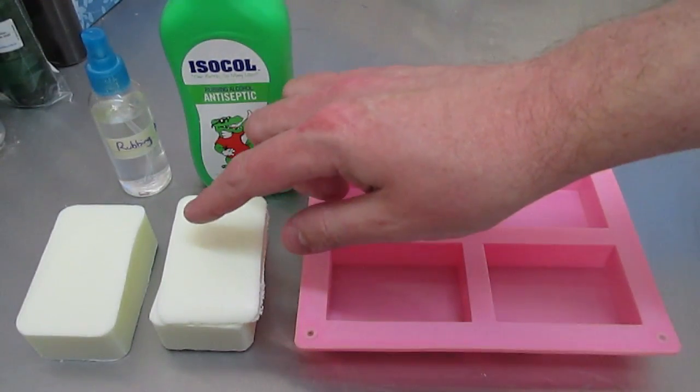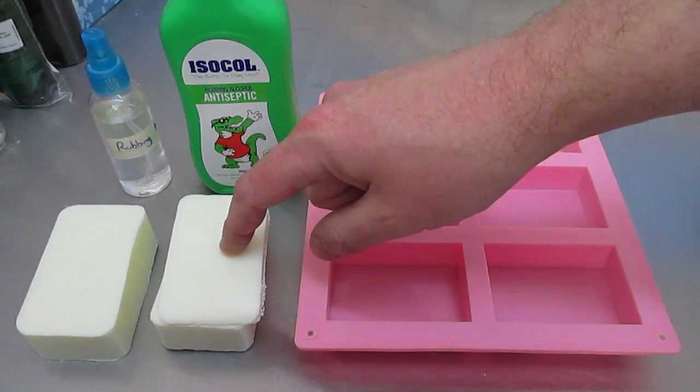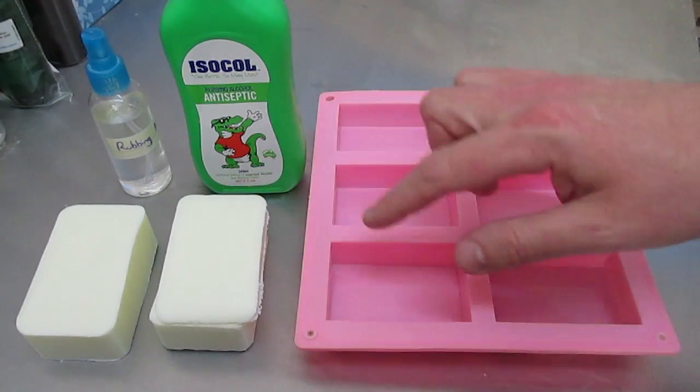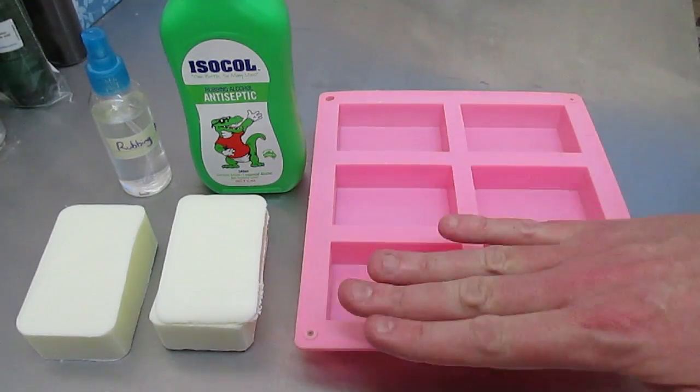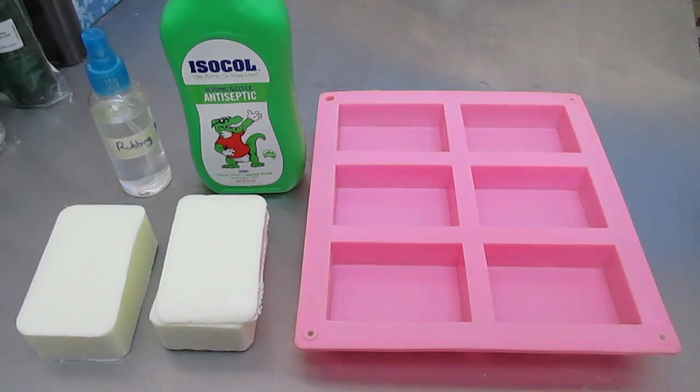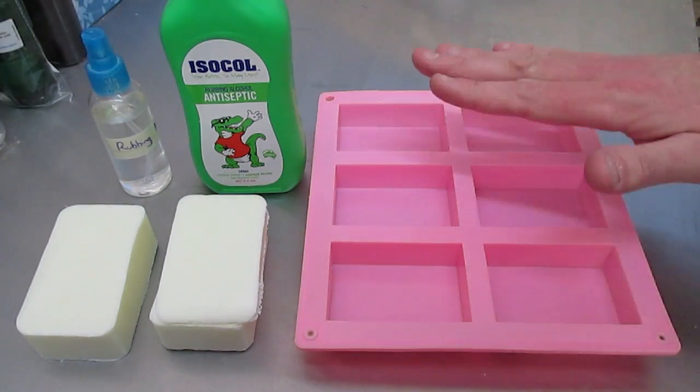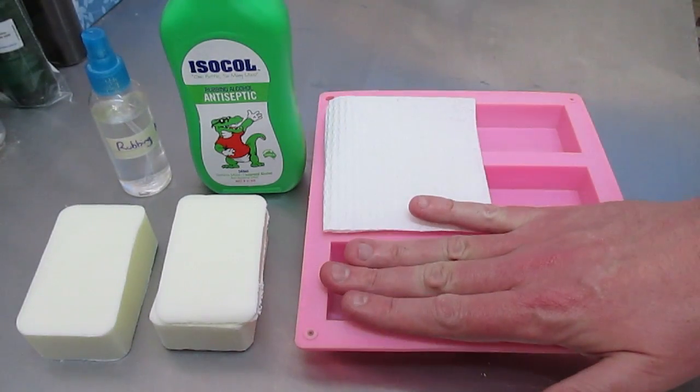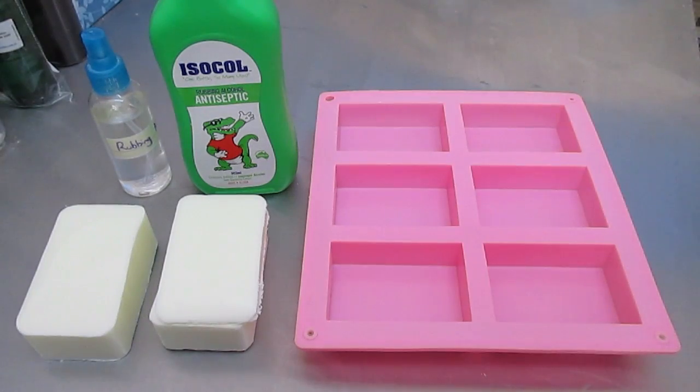So in today's test I've got 200 grams of goat's milk soap and another 200 grams of goat's milk soap. The first one that I'm going to melt down I'm going to put in two cavities and that is going to be the bottom. I'm then going to let them set to a point where I would spray the rubbing alcohol.